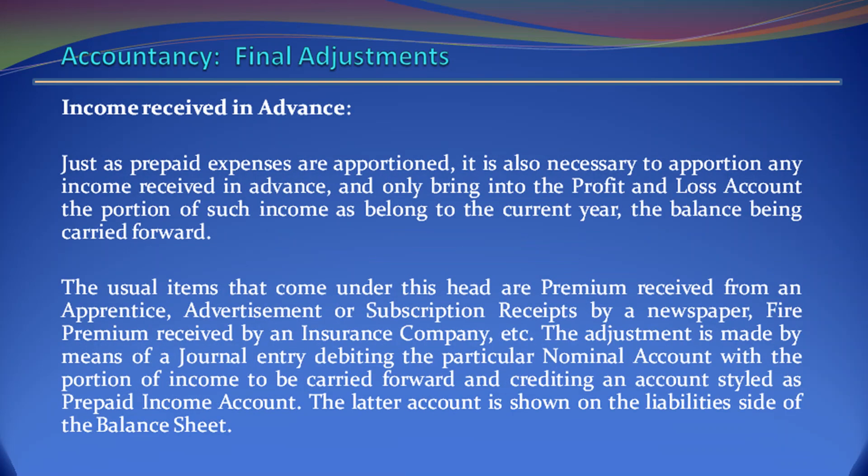Income Received in Advance. Just as prepaid expenses are apportioned, it is also necessary to apportion any income received in advance, and only bring into profit and loss account the proportion of such income as belongs to the current year, the balance being carried forward. The usual items that come under this head are premium received from an apprentice, advertisements or subscription receipts by a newspaper, fire premium received by an insurance company, etc. The adjustment is made by debiting the particular nominal account with the portion of income to be carried forward and crediting an account styled as prepaid income account. The latter account is shown on the liabilities side of the balance sheet.